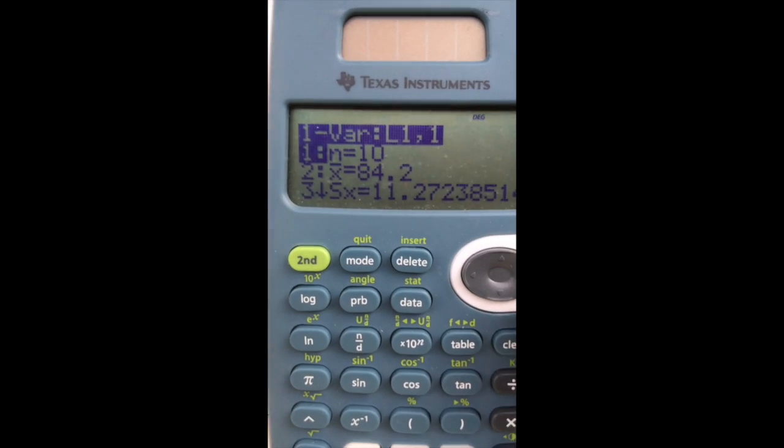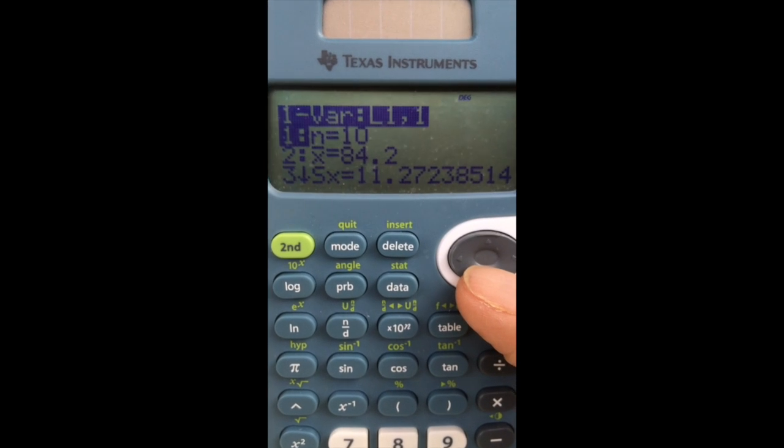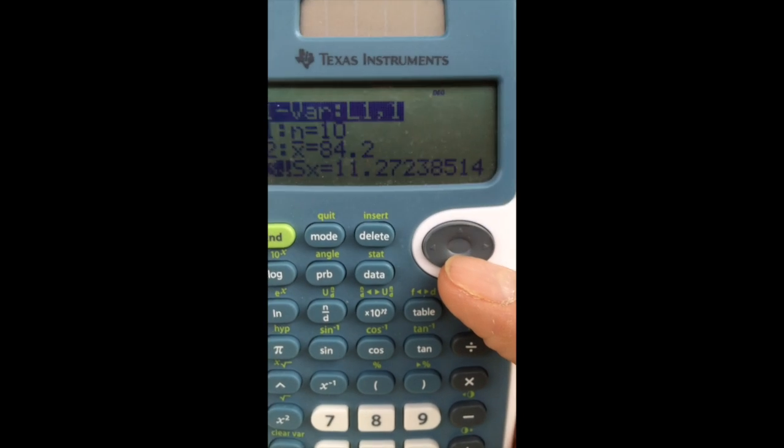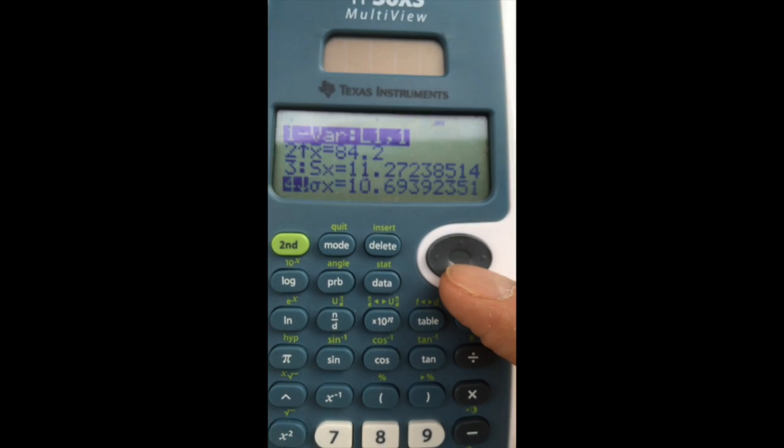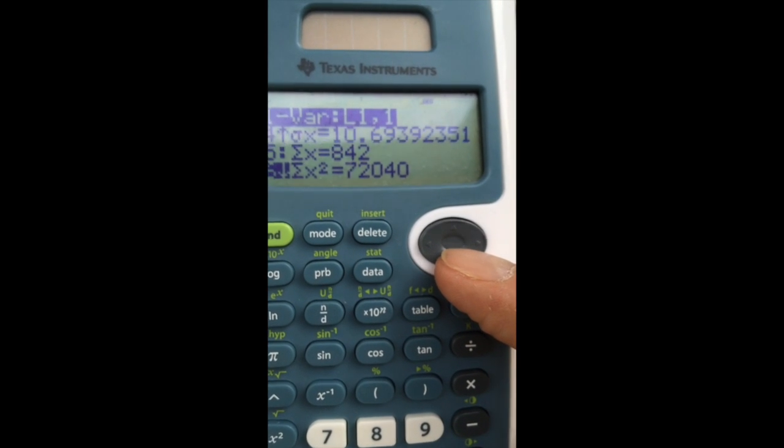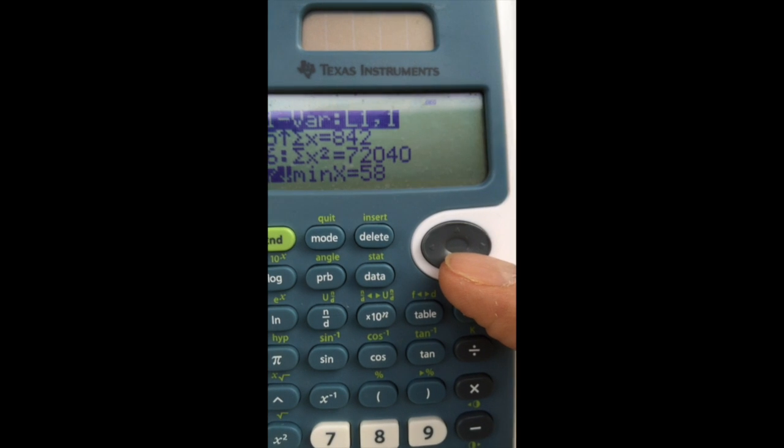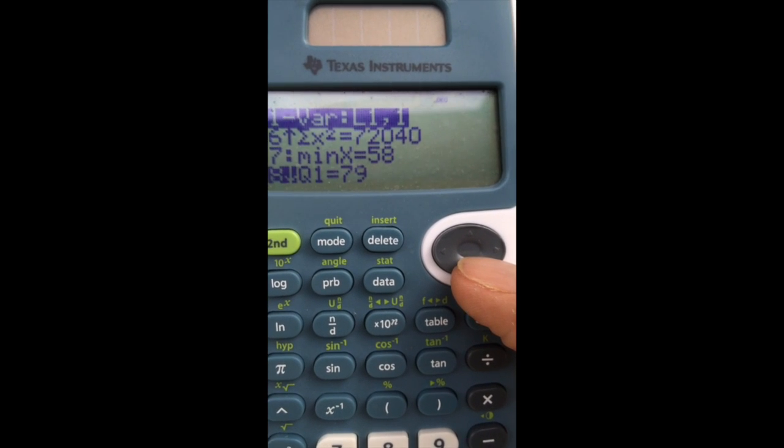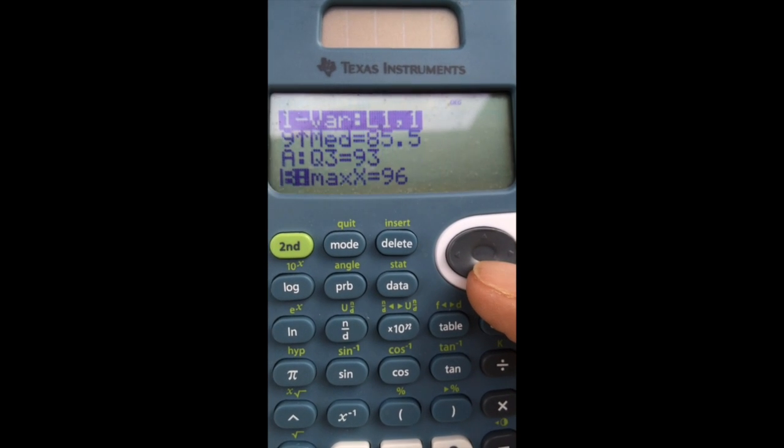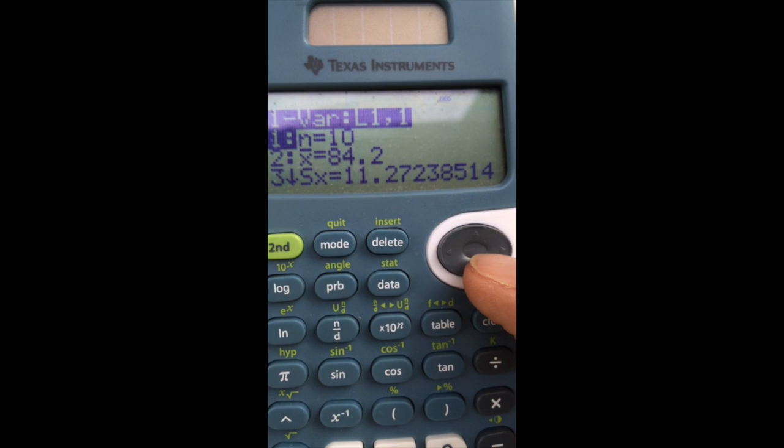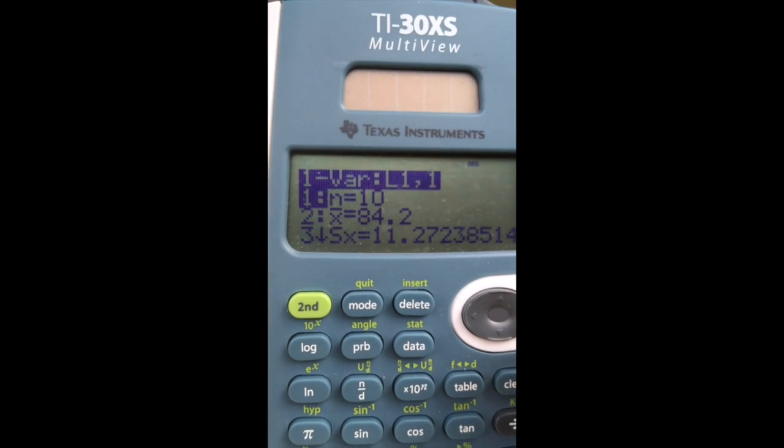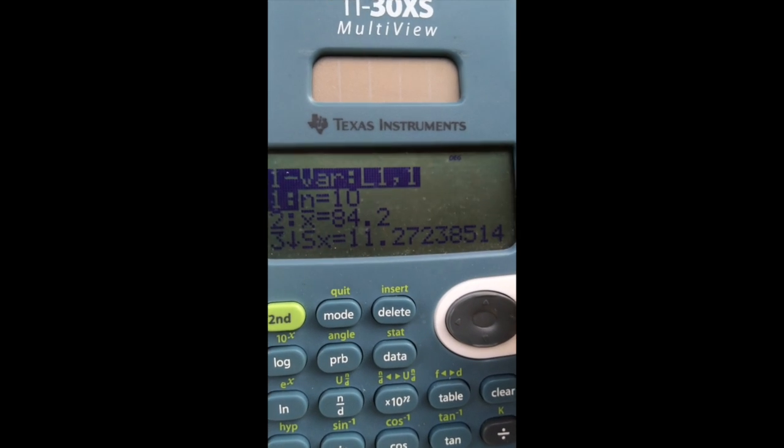Here's my information. We have 10 numbers. Notice, here are my five number summary. Minimum, first quartile, median, third quartile, and maximum. And then it repeats that data. Really nice calculator, lots of information.